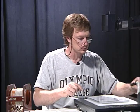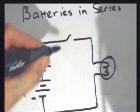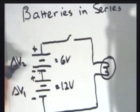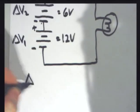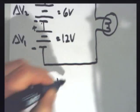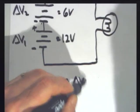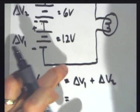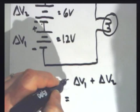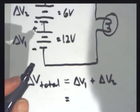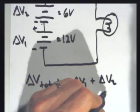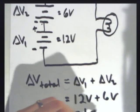So let's do an example, like this one right here. Let's say this is 6 volts. This is 12 volts, delta V2, delta V1. Delta V total is equal to delta V1 plus delta V2. That's my working equation, which is 12 volts plus 6 volts gives me 18 volts.